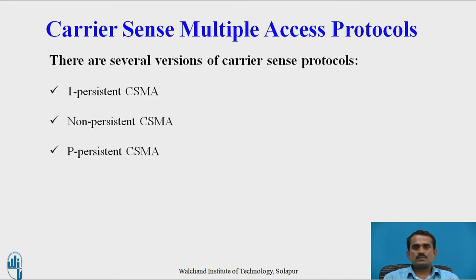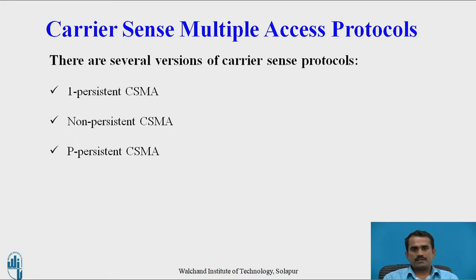First one is Carrier Sense Multiple Access. Before transmitting the data to the next station, the current station has to check whether the next station is free or busy. If it is free, then only the current station can transfer the data to the next station. If it is busy, then you have to wait. There are several versions of Carrier Sense Multiple Access Protocols.